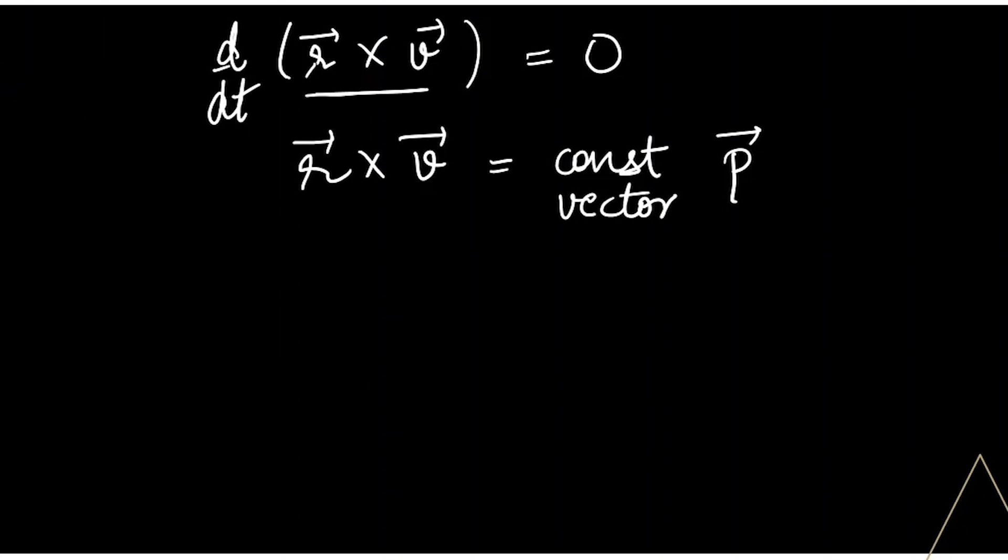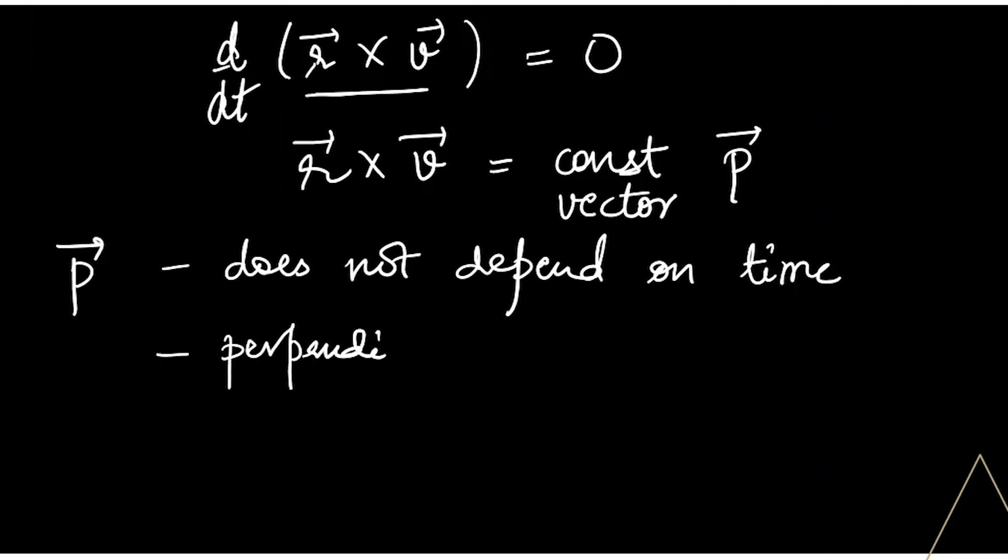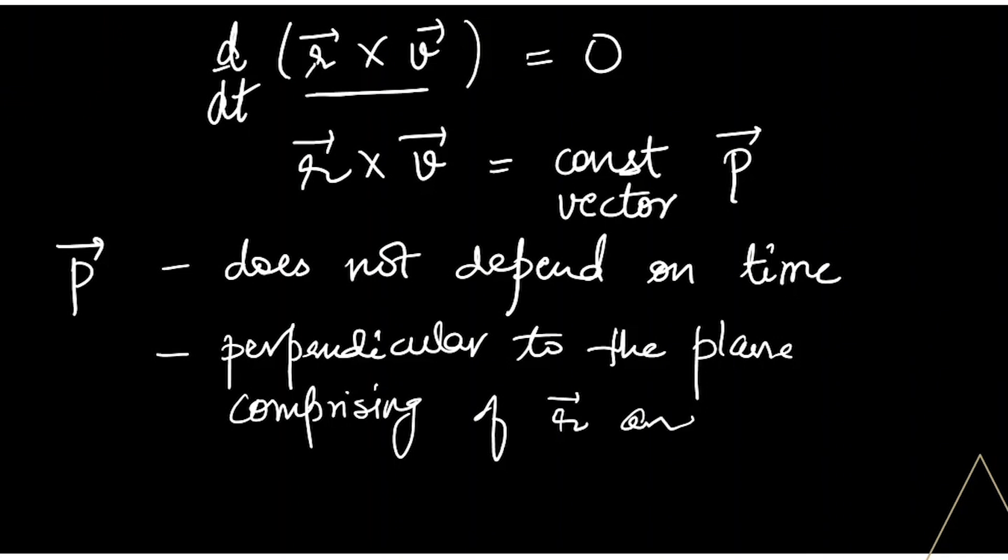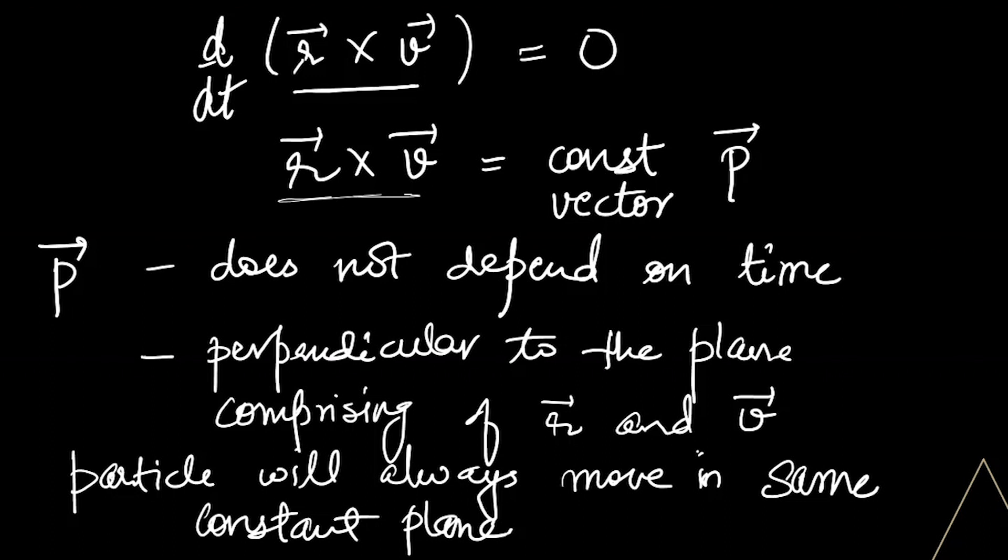That means our vector P does not depend on time, and also we got to know that P is perpendicular to the plane comprising of R, the position vector, and V, the velocity vector. So this is the proof.